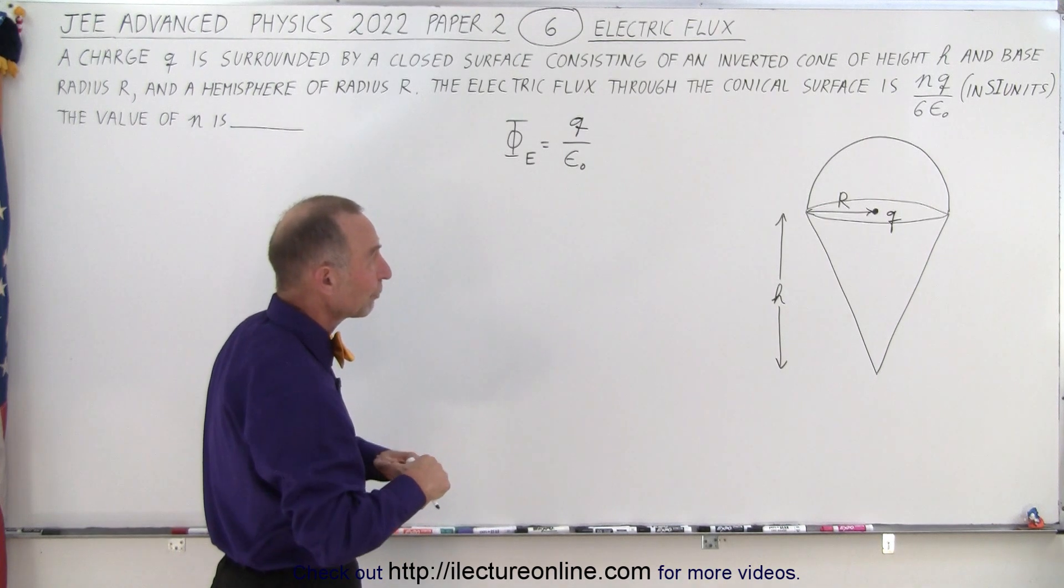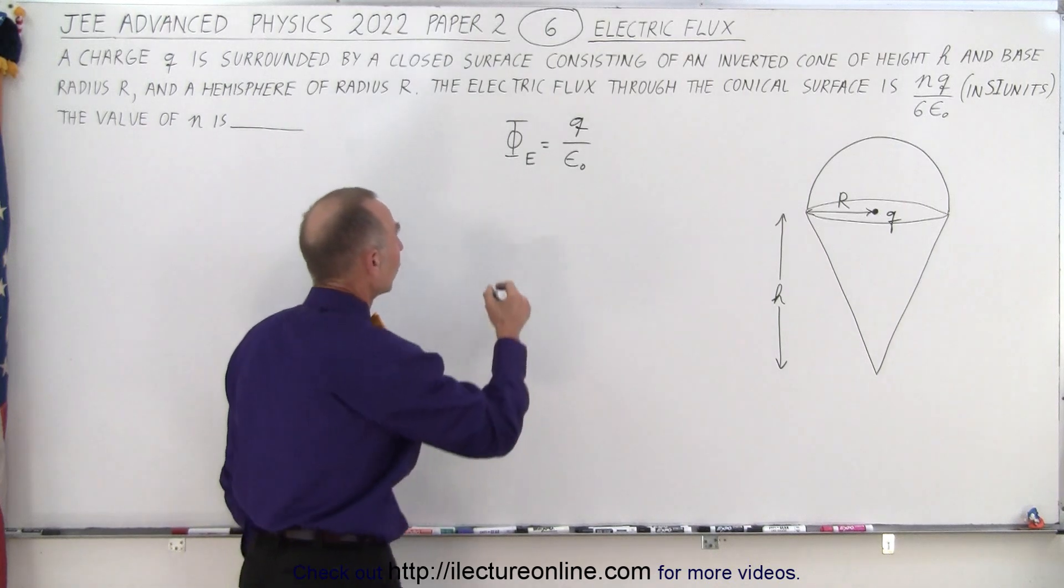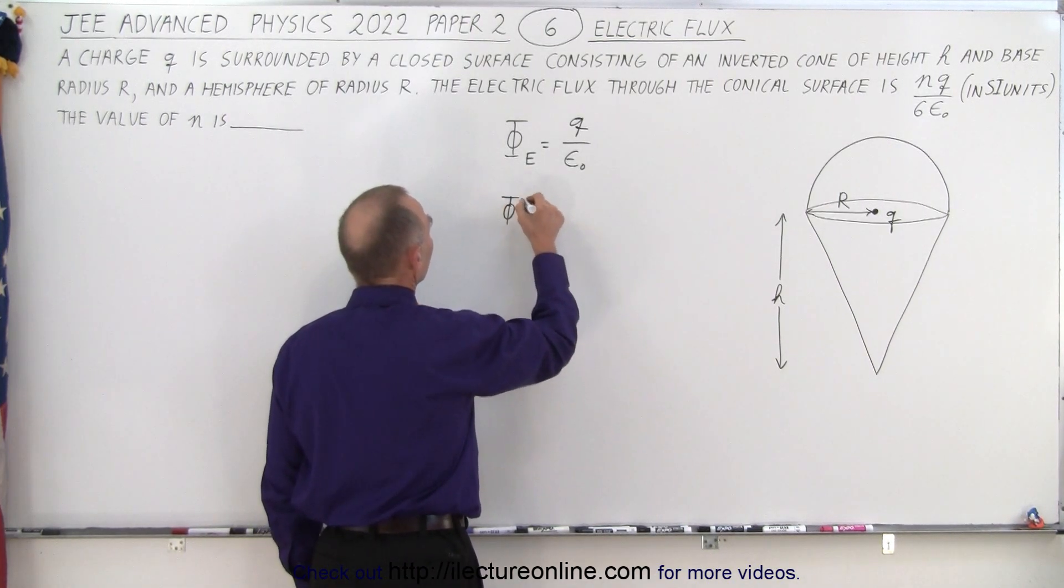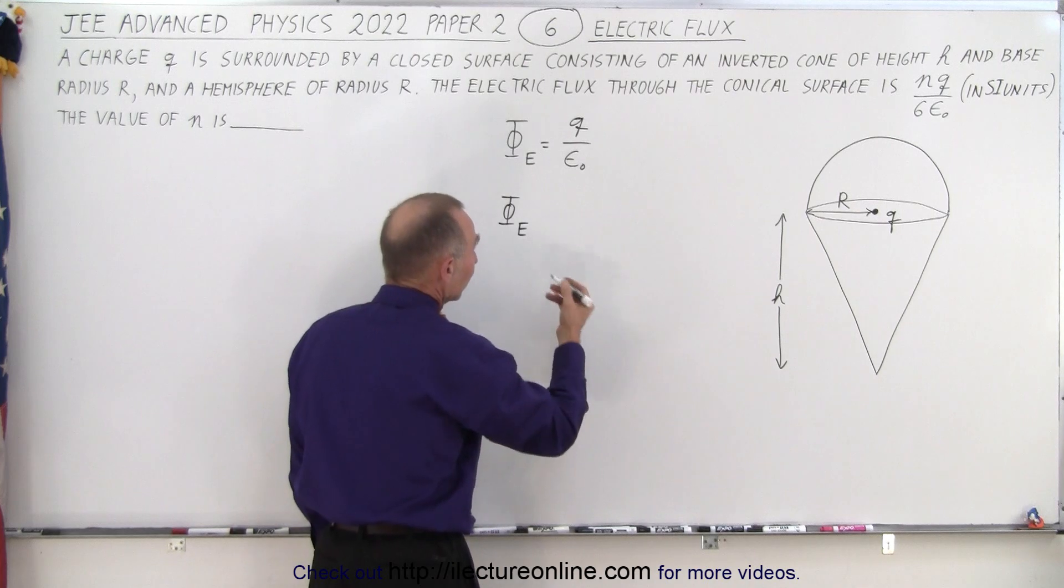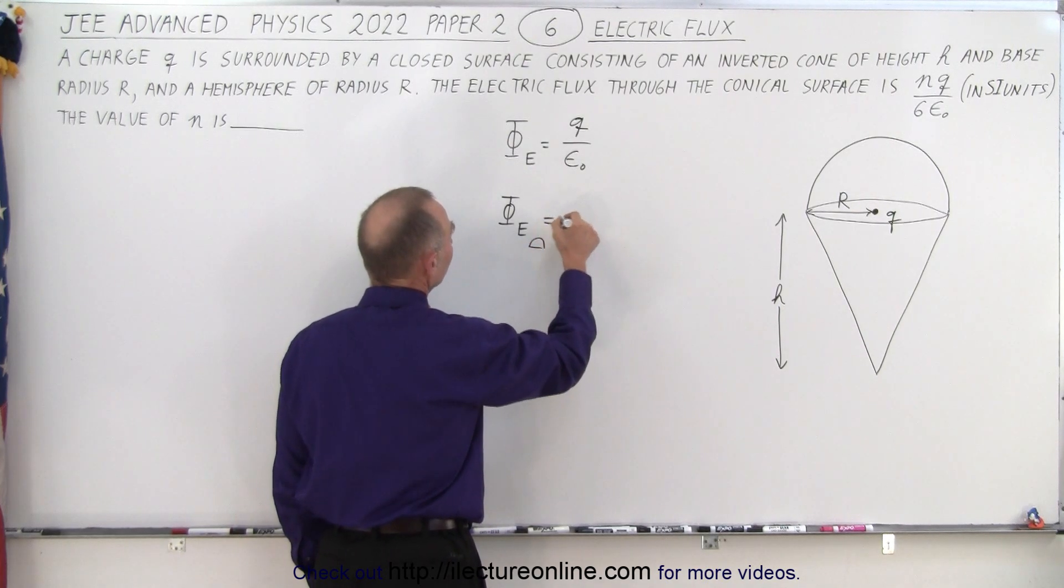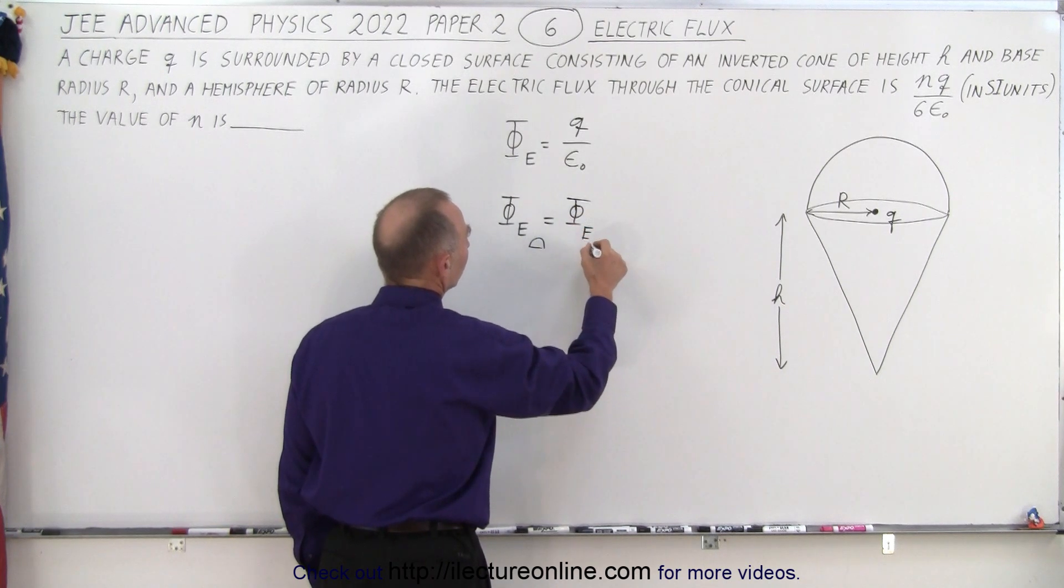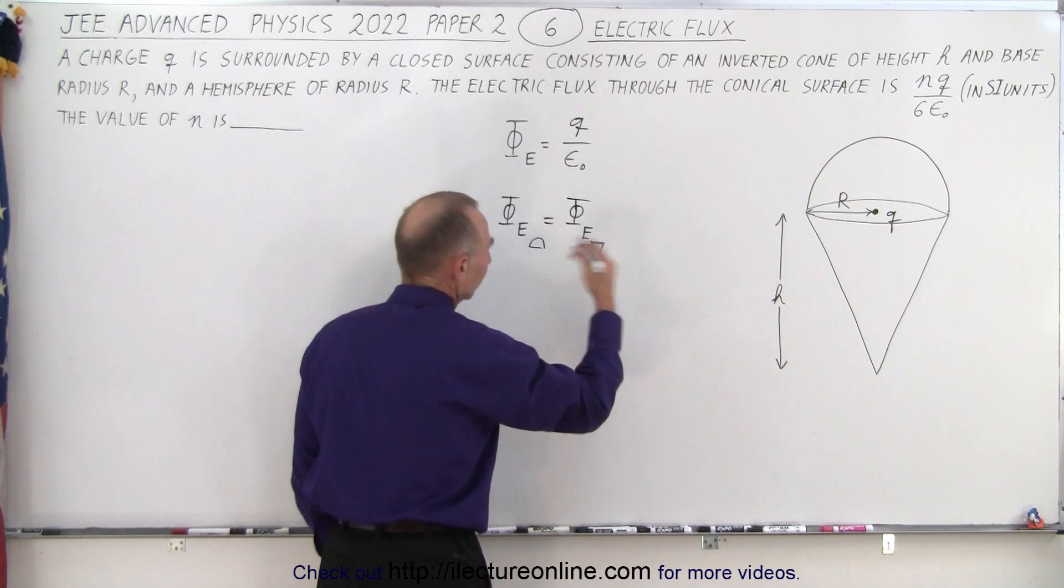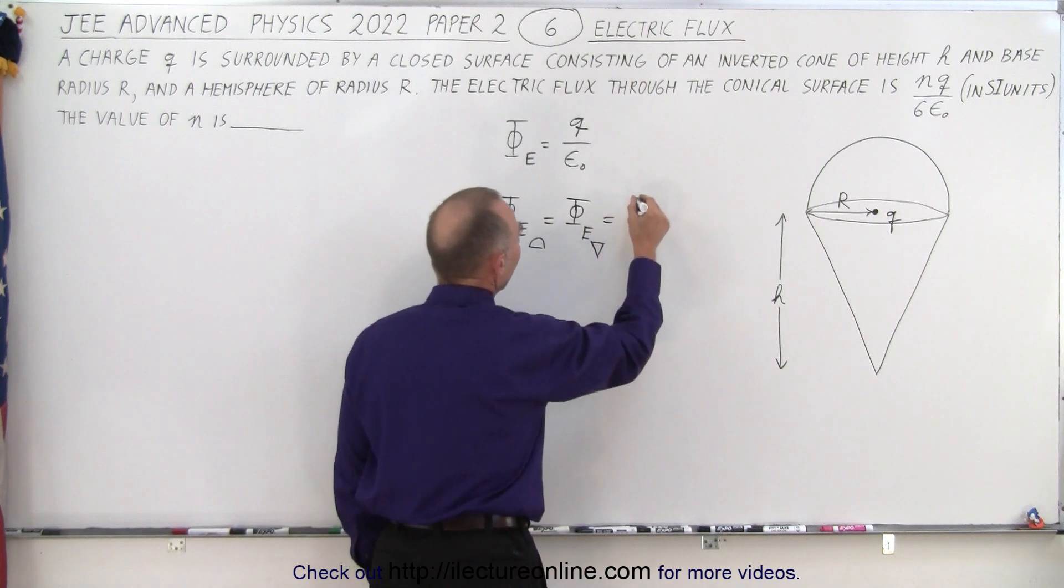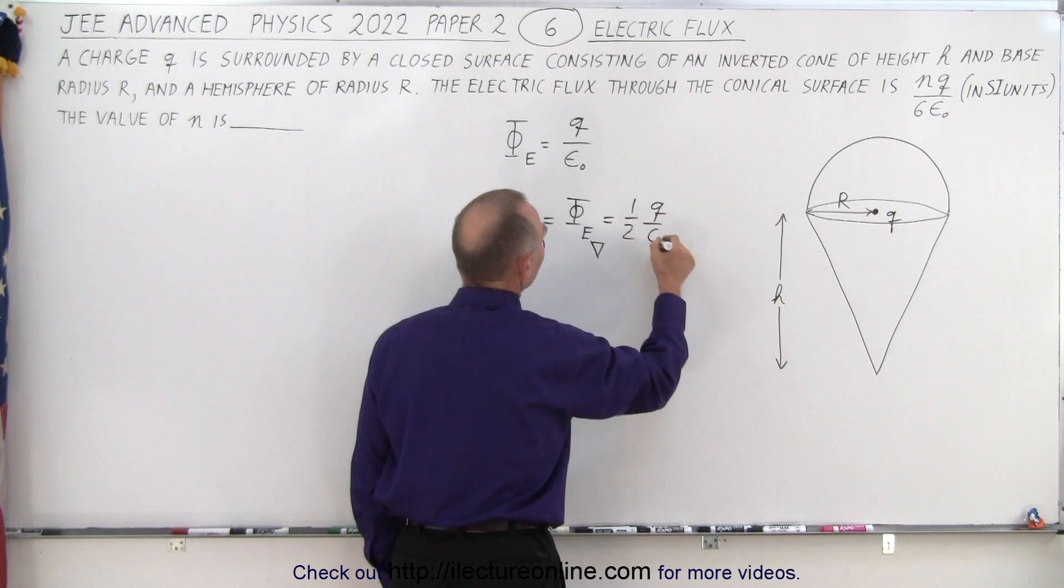And how do we know the flux through the hemisphere? Well, it should be half of the total flux. So the flux through the hemisphere, which is the same as the flux through the cone section, is going to be half Q divided by ε₀.